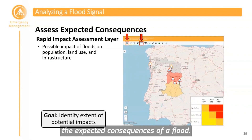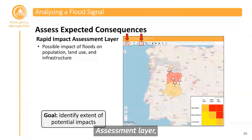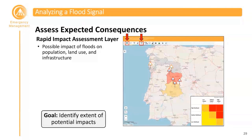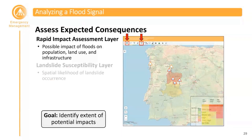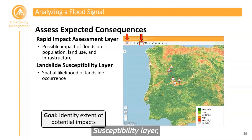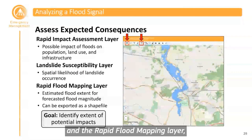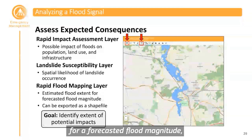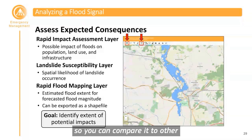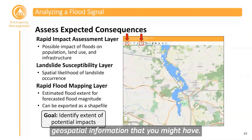It is also good to assess the expected consequences of a flood. The rapid impact assessment layer provides the possible impact of floods on population, land use, and infrastructure, summarized according to an impact matrix. There is also the landslide susceptibility layer, which provides the spatial likelihood of landslide occurrence, and the rapid flood mapping layer, which can be used to estimate the flood extent for a forecasted flood magnitude. A handy feature is that you can export this layer as a shapefile to compare it with other geospatial information you might have.